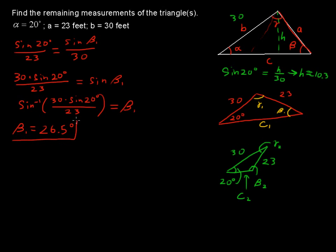And by the way, if you haven't found it already, that inverse sine button is usually just above the sine button. You use a second feature or something like that to access that inverse sine. What else do we need to find? Do we need to find gamma and c sub 1? Well, gamma can be found.